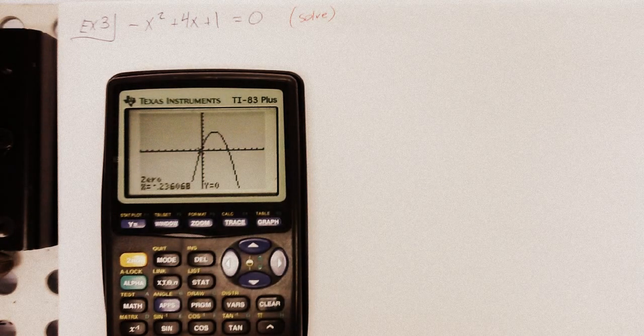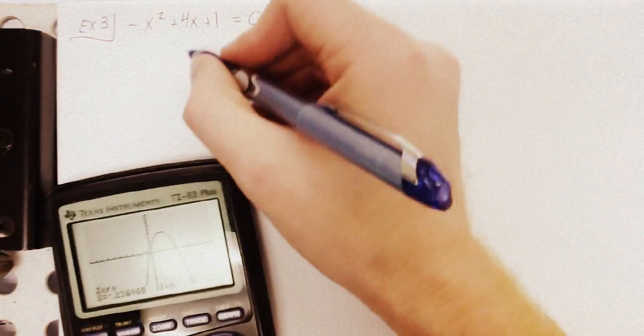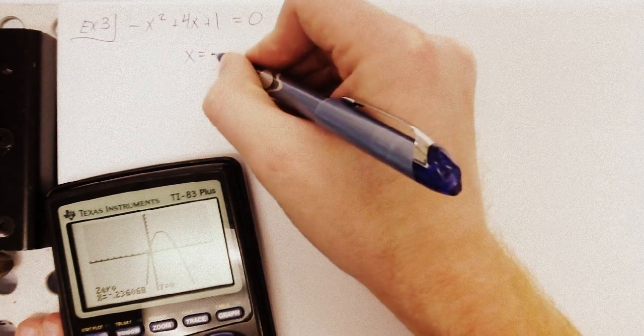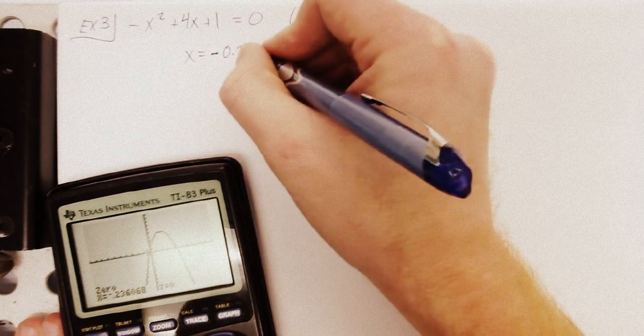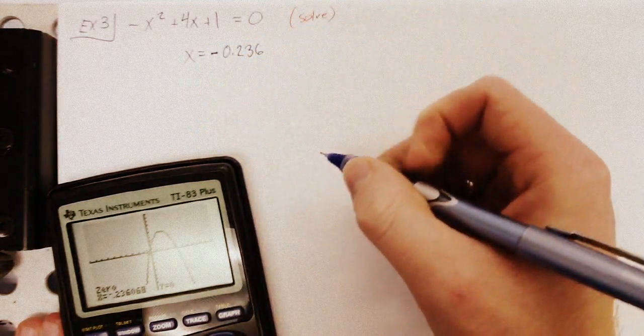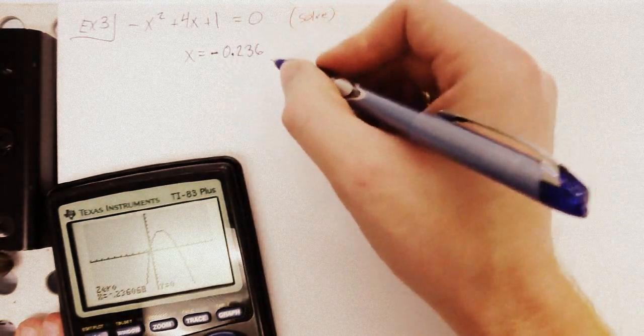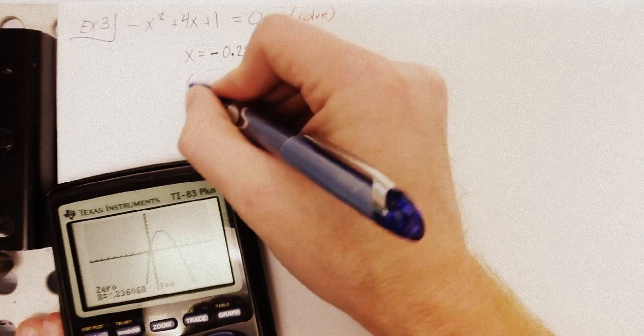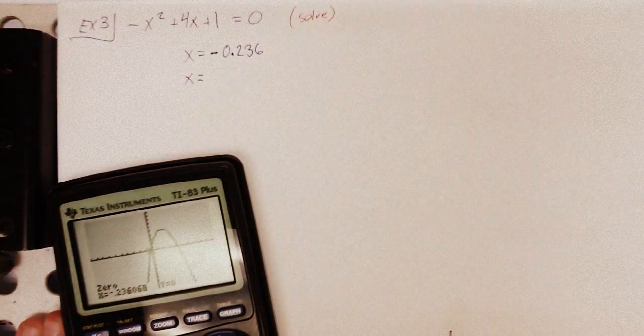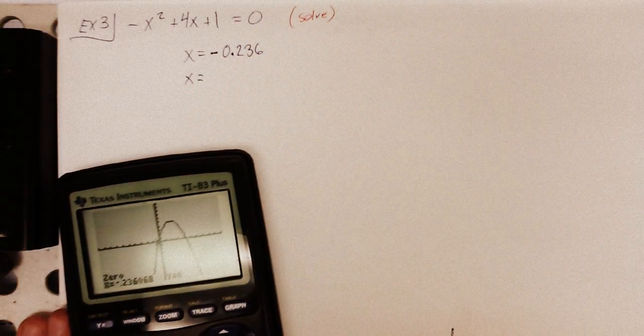And there you go. So, it's an irrational number. It's negative 0.236. Two, three decimal places. Three decimal places is always good. Two's pretty good. But if you're in doubt, I'd go with three on this.